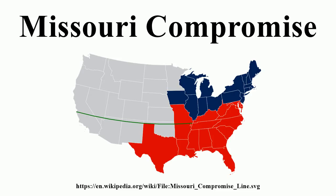Moreover, since each state had two Senate seats, Missouri's admission as a slave state would result in more southern than northern senators. A bill to enable the people of the Missouri Territory to draft a constitution and form a government preliminary to admission into the Union came before the House of Representatives in Committee of the Whole.